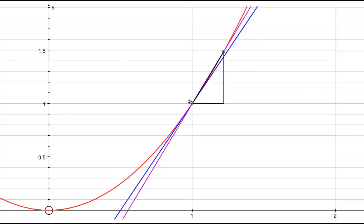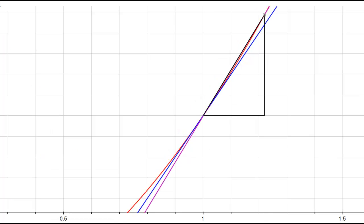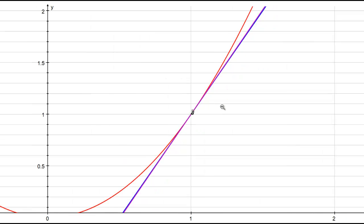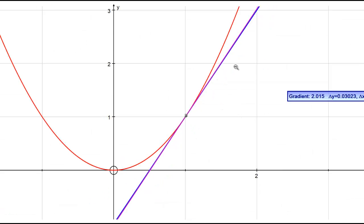And if we zoom in on the point that we're looking at, and draw the line even closer, you can see that as we get really, really close to the line, that line is getting incredibly close to being the same as the line we're looking at, the tangent that we want. And if we zoom back out, we can see really that those two lines have become almost identical now, and the gradient function has got very, very close to 2.